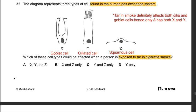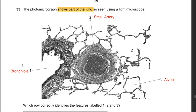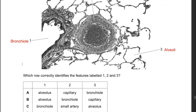Question 32: The diagram shows three types of cells in the human gas exchange system. Which cell types are affected when a person is exposed to tar in cigarette smoke? X is a goblet cell, Y is a ciliated cell, Z is a squamous cell. Tar affects both goblet cells and ciliated cells. Since X and Y must both be present, and only answer A includes X, Y, and Z, the answer is A. Question 33: The photomicrograph shows part of the lung. Feature 1 is the bronchiole, 2 is the small artery, 3 is the alveolus. Since 1 is a bronchiole, the only possible answer is C.